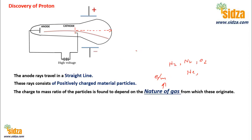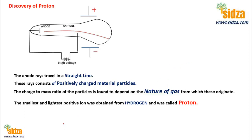Experiments reveal that when hydrogen gas is taken inside the discharge tube, the particles present in the anode rays have the minimum mass — these are the lightest positively charged particles. The lightest positively charged particle is observed when hydrogen gas is used inside the discharge tube, and this positively charged particle obtained from hydrogen gas was called the proton.